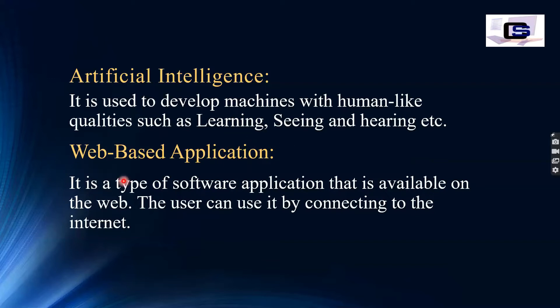Next, we call it a web-based application. It is a type of software application that is available on the web. The user can use it by connecting to the internet. For example, you can open Google Chrome. A web-based application is accessed when we connect to the internet.